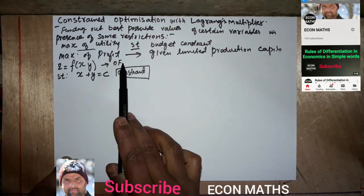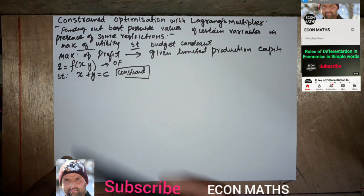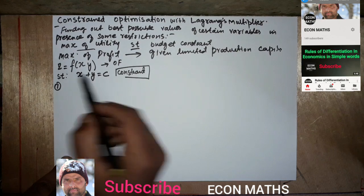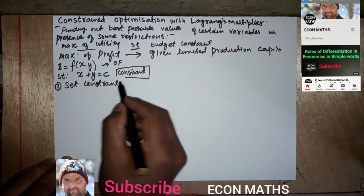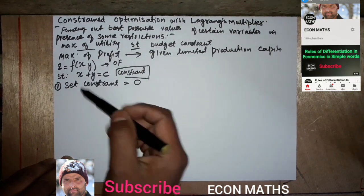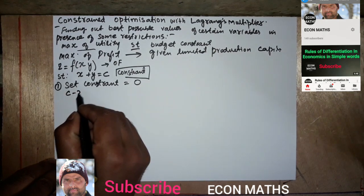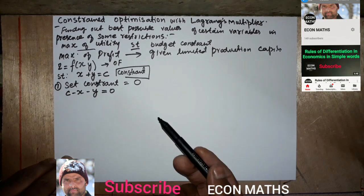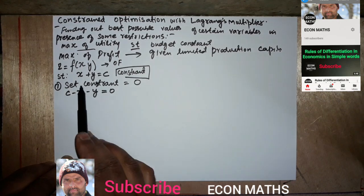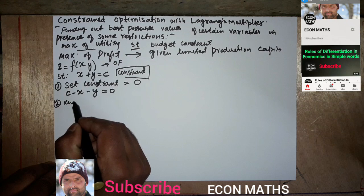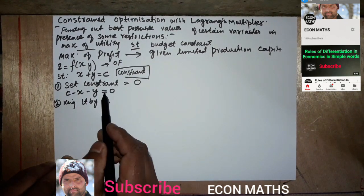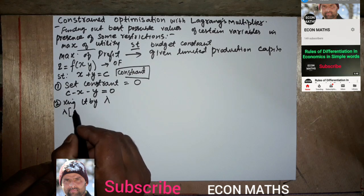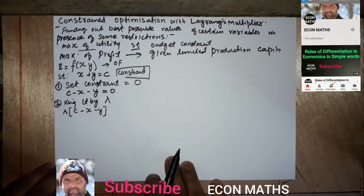We are given the objective function and the constraints. Now, how will we form the Lagrange's multiplier? The first step is to set the constraint equal to 0. For example, X + Y = C becomes C − X − Y = 0. The second step is to multiply it by lambda, giving lambda times (C − X − Y).